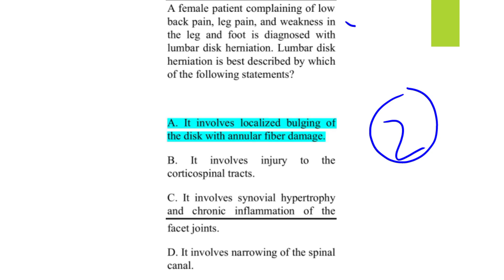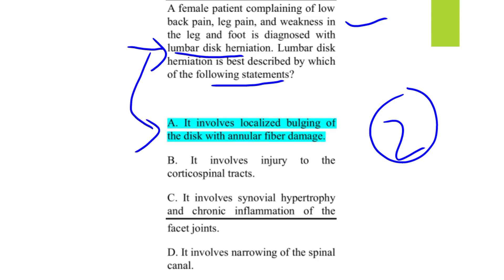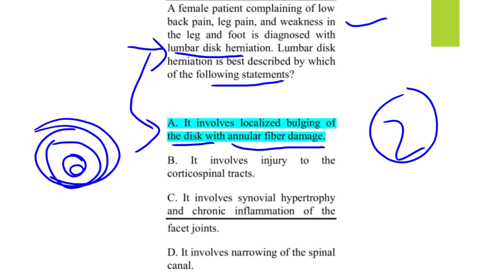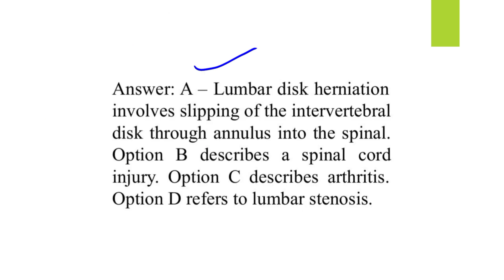MCQ number two: a female patient complains of low back pain, leg pain, and weakness in the leg and foot, diagnosed with lumbar disc herniation. The best description of lumbar disc herniation is localized bulging of the disc with annular fiber damage. The nucleus pulposus makes up about 75–80% and the annulus fibrosis about 20–25%.